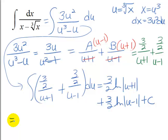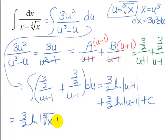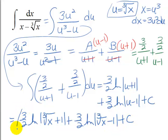Last step, we'll go ahead and re-substitute. And remember our u was the cube root of x. So we have 3 halves ln of cube root of x plus 1 plus 3 halves ln of cube root of x minus 1 plus a constant.